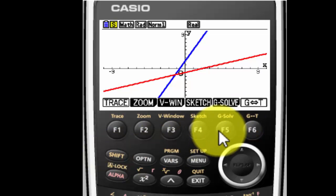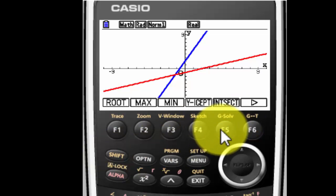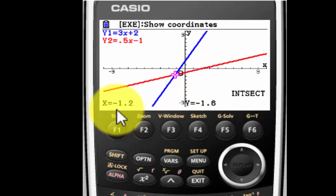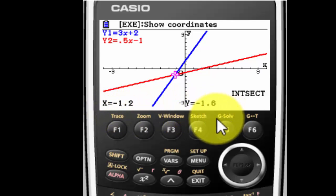I'm going to hit Shift and F5, which is going to give me G-solve. And I want to know the intersection. It may say ISCT. It might say Intersect right here. And if I hit that, it tells me it intersects at x equals negative 1.2 and y equals negative 1.6.